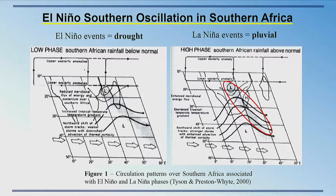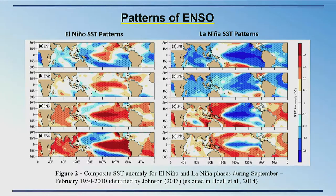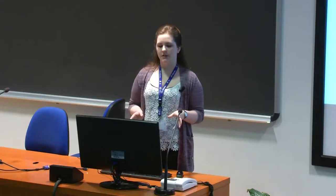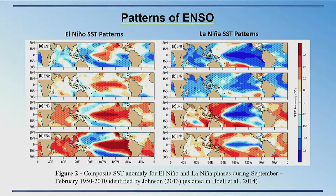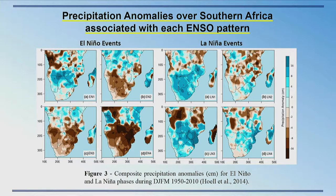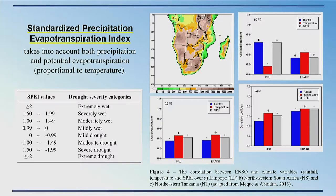However, there is high inter-El Niño variability — not all El Niño events result in drought and not all La Niña events result in wet conditions. My research is based on sea surface temperature anomalies identified by Johnson through self-organizing maps. Johnson focused on the Pacific Ocean and created eight ENSO patterns, which Hull then expanded to include all three tropical oceans, creating eight broader ENSO patterns. Hull also explained the precipitation anomalies associated with each pattern over southern Africa.